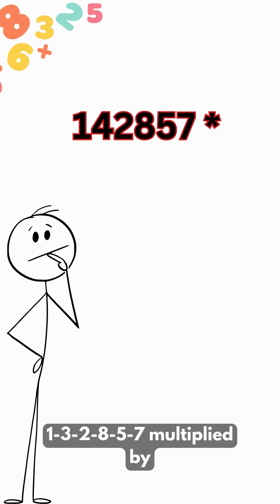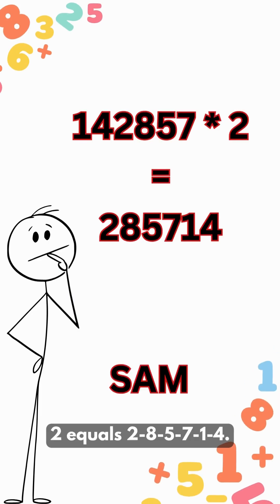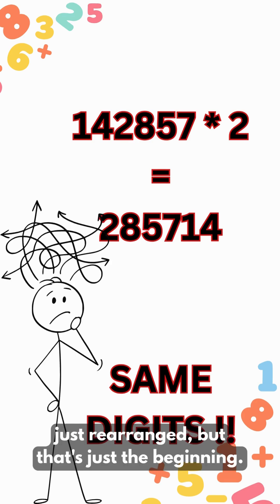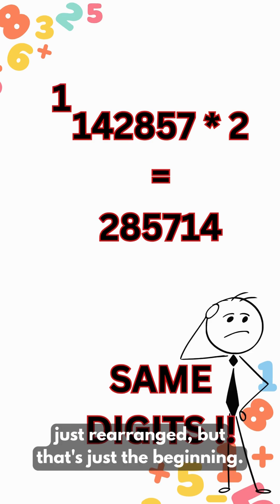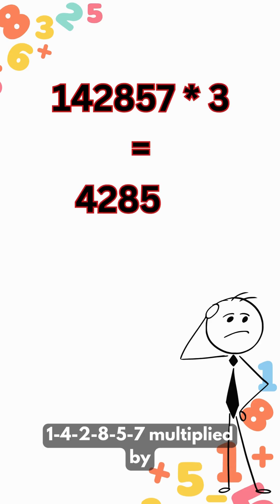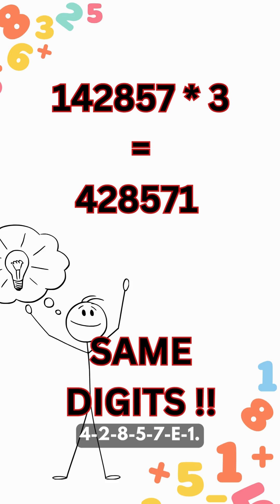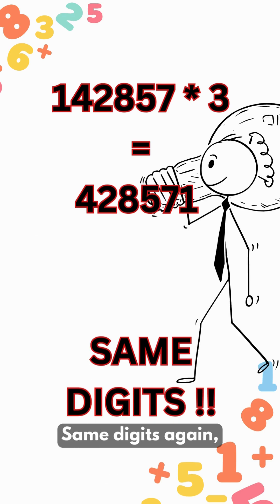142857 multiplied by 2 equals 285714. Wait, same digits, just rearranged. But that's just the beginning. 142857 multiplied by 3 equals 428571. Same digits again.